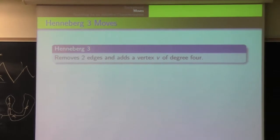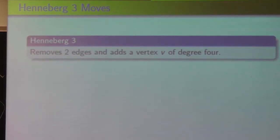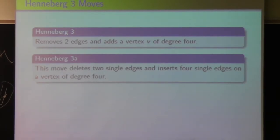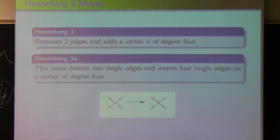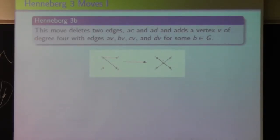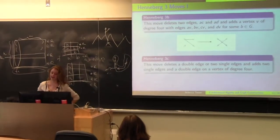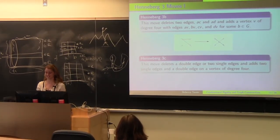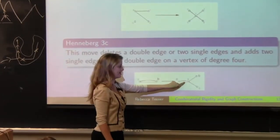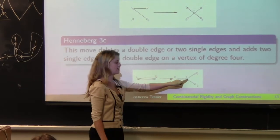So the Henneberg 3 moves, so this removes two edges and adds a vertex of degree 4. As well, the inverse moves work in the same way, but I'm not going to go into describing all of them. I'm going to let the pictures explain them because there are a large number of them. So the Henneberg 3a move deletes two single edges and inserts four single edges on the vertex of degree 4. So it's kind of like you're replacing that X with another X, but you have a vertex in the middle. As well, the Henneberg 3b move deletes two edges that share one common vertex and adds a vertex of degree 4. So for example, if you're deleting this double edge here, you're adding in this vertex V right here and a double edge, and then a single edge to this V right here, and another single edge to some other point in the graph.